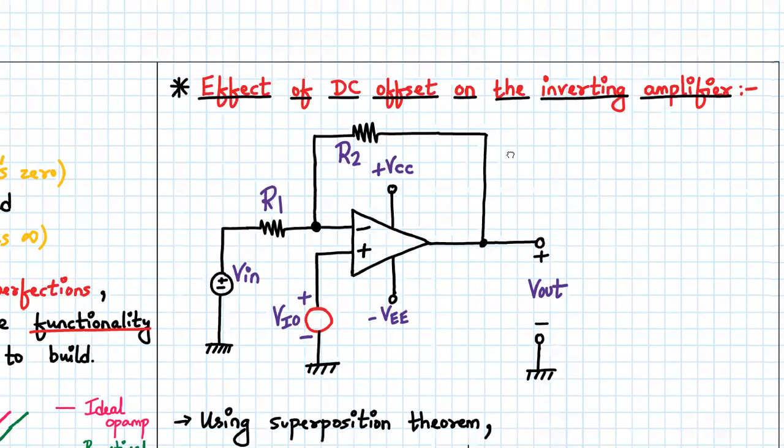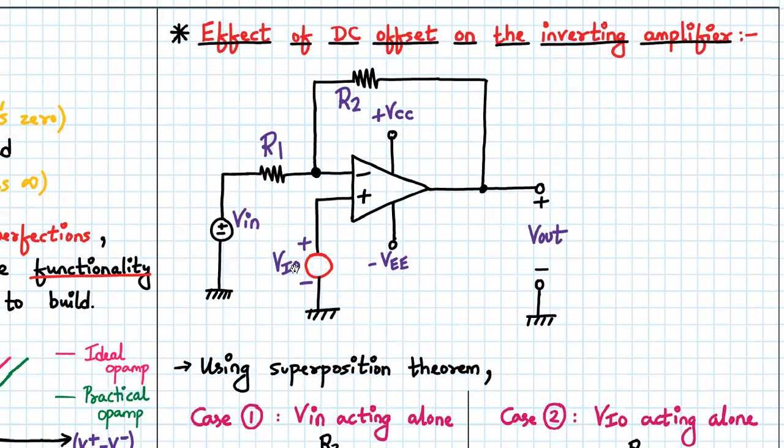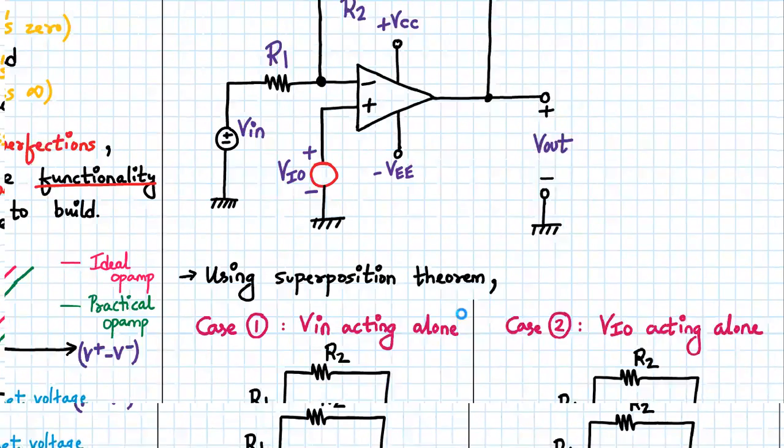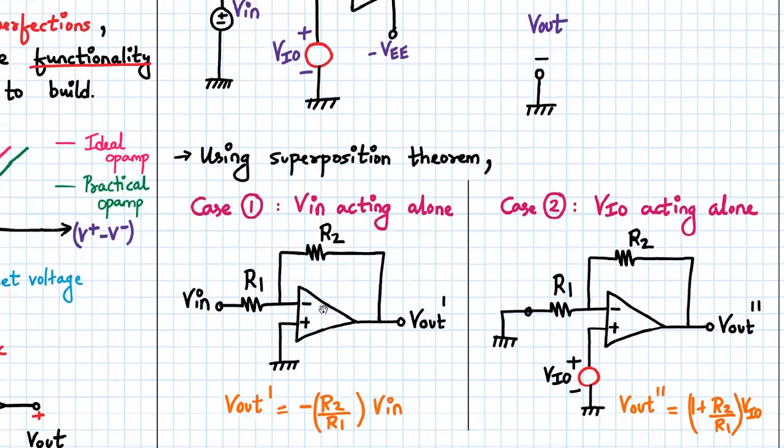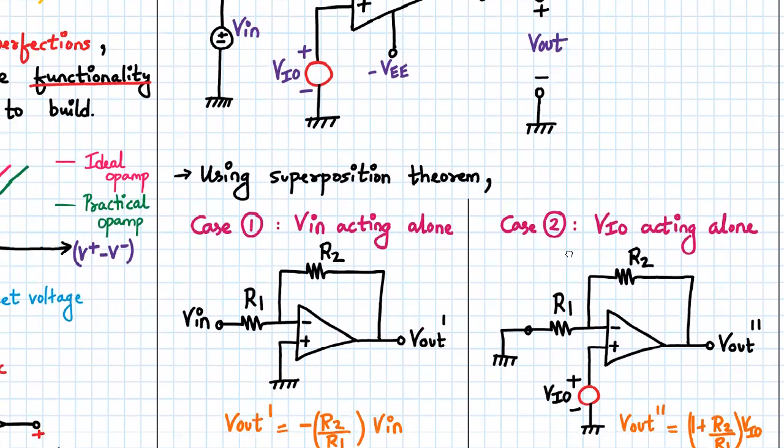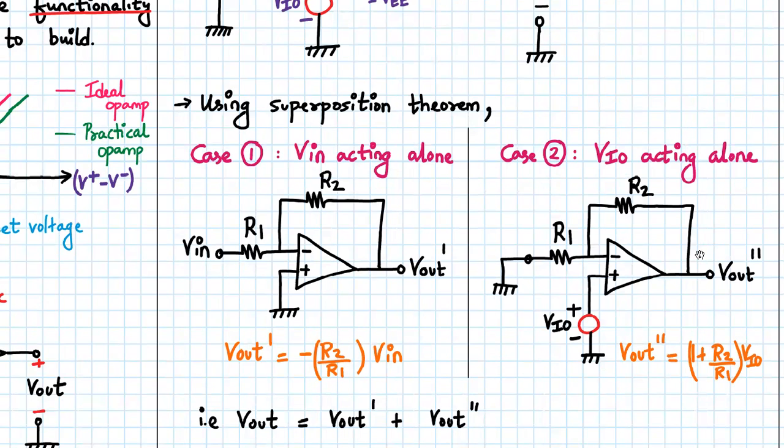Now let's study the effect of DC offset on the inverting amplifier. Here we connect the VIO source in the non-inverting terminal. Can we apply superposition theorem? Yes, because there are two sources, Vin and VIO. When Vin is acting alone, your circuit becomes a normal classical inverting amplifier, so Vout = -(R2/R1) × Vin. In the second case, when VIO is acting alone, Vin is grounded, so this amplifier looks like a non-inverting amplifier, so Vout'' = (1 + R2/R1) × VIO.